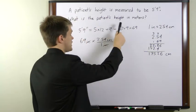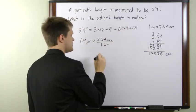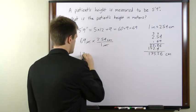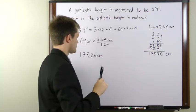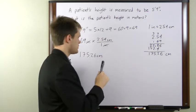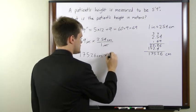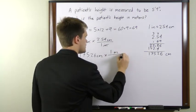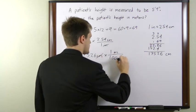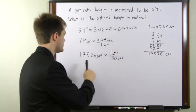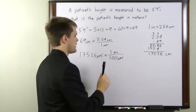Now we're asked for the patient's height in meters. So to convert from centimeters to meters we need another conversion factor. There are 100 centimeters per meter. So we'll multiply the number of centimeters times 1 meter per 100 centimeters. The centimeters will cancel and what we have is 175.26 times 1 meter divided by 100.